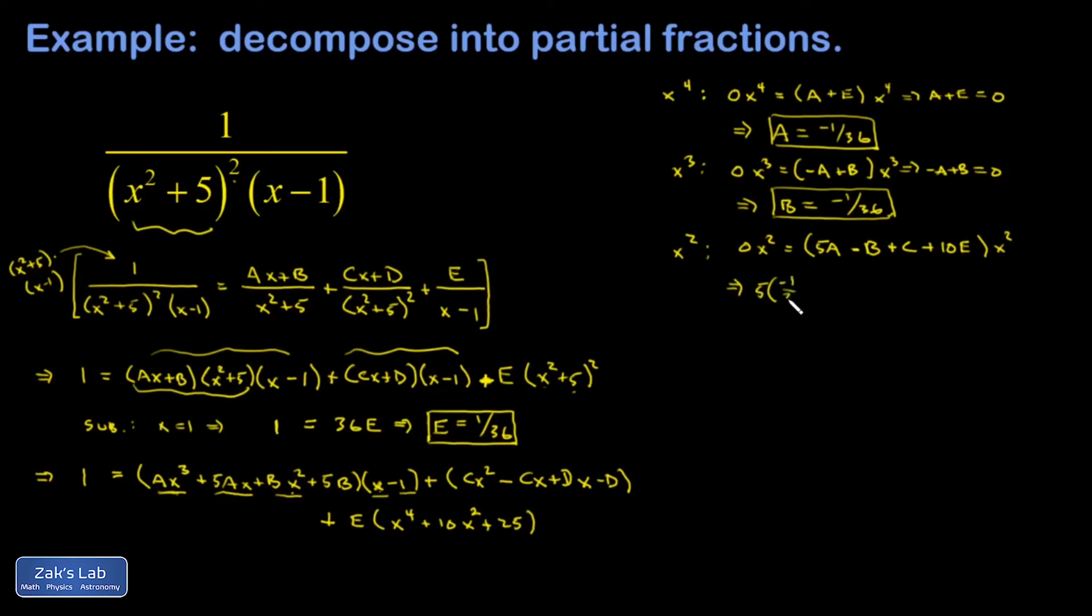minus b, so plus 1/36, plus c, plus 10e, so 10/36, is equal to 0. So -5/36 + 1/36 is -4/36, so c plus 6/36, that's 1/6, equals 0. So c is going to be -1/6.